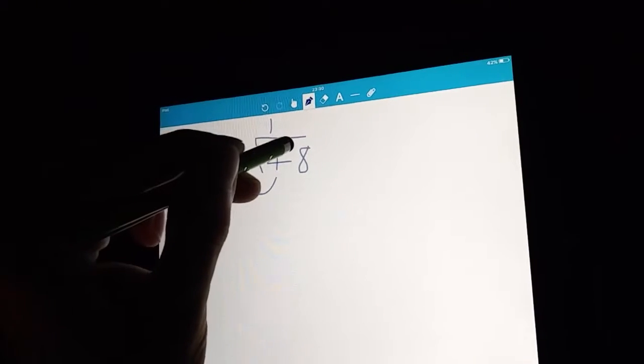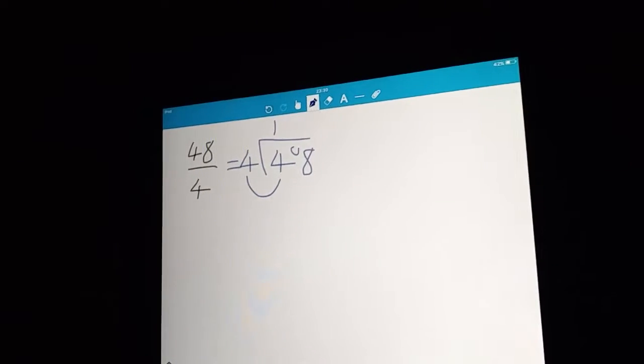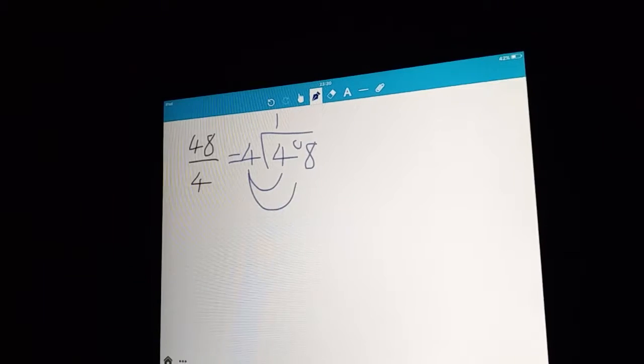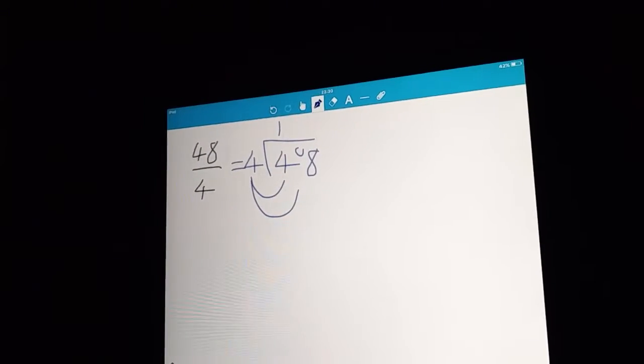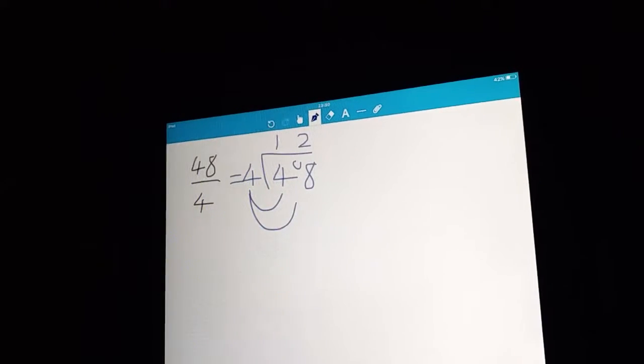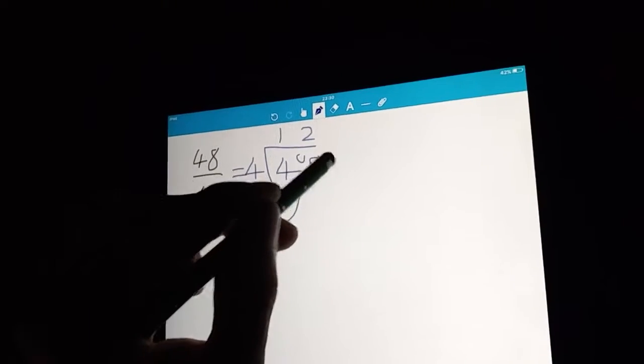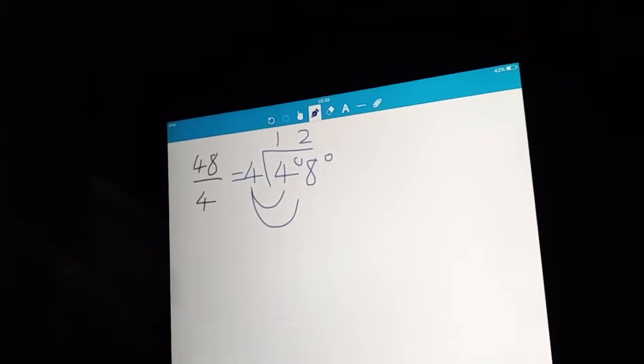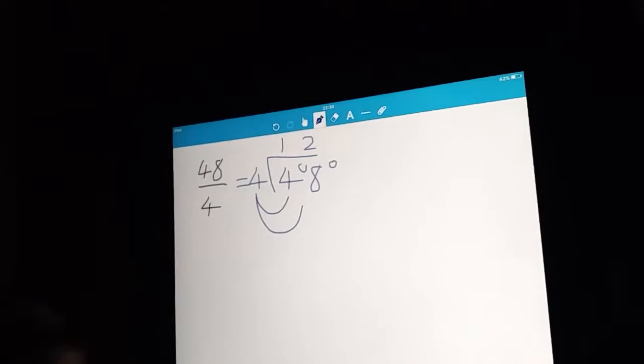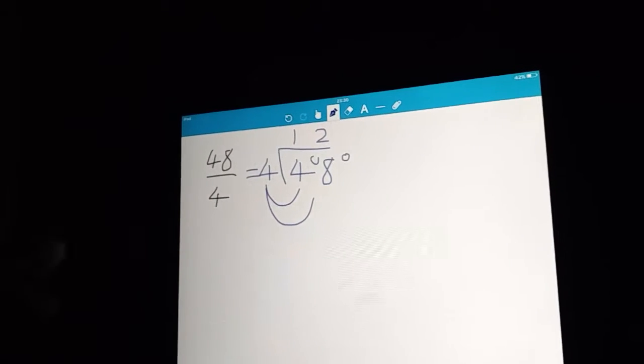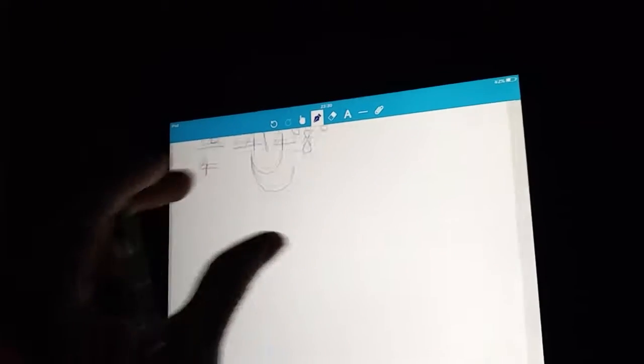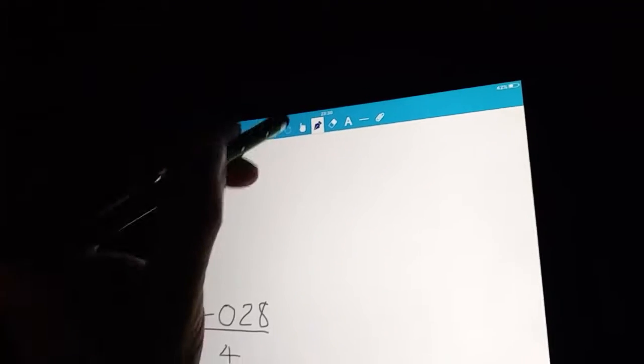There's no remainder, but we'd put the remainder here in any example. So now it's the same question. How many 4s go into 8? Well that's 2. So we put the answer at the top here, and the remainder is 0. We've finished, it's 12. I know that's a really easy example, you probably already knew that. 48 divided by 4 is 12.